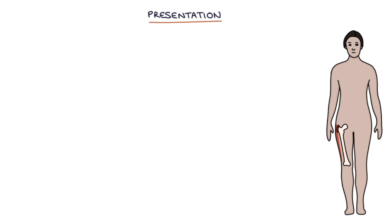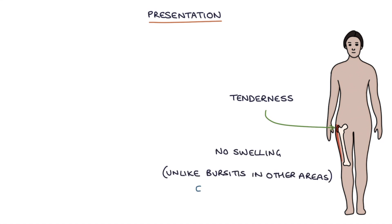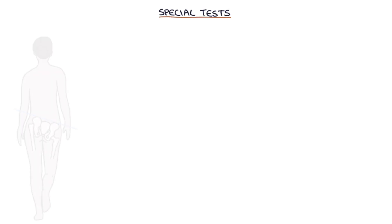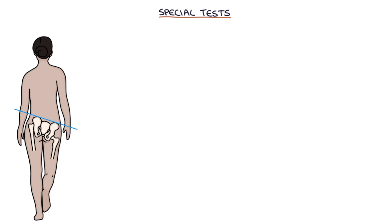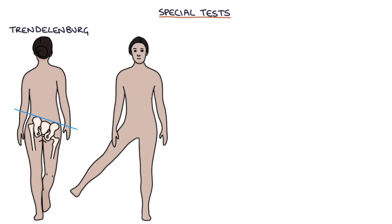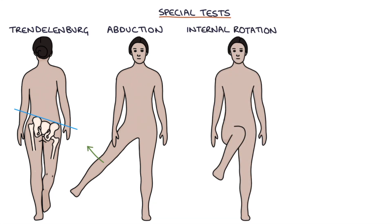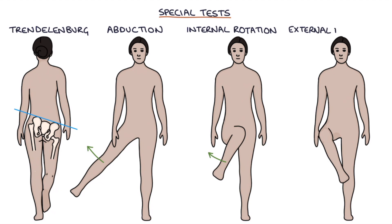On examination there is tenderness over the greater trochanter on the outside of the hip. There's not usually any swelling, unlike bursitis in other areas — for example, olecranon bursitis where there can be quite a lot of swelling at the elbow joint. The NICE clinical knowledge summaries updated in 2016 suggest special tests to help establish a diagnosis: the Trendelenburg test, and resisted movements such as resisted abduction, resisted internal rotation, and resisted external rotation of the hip.